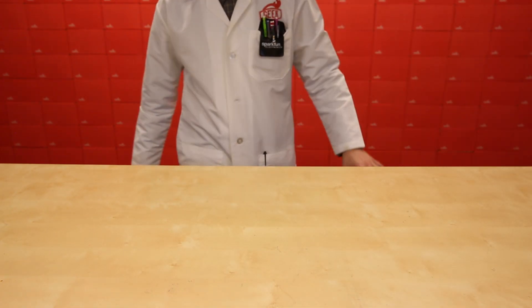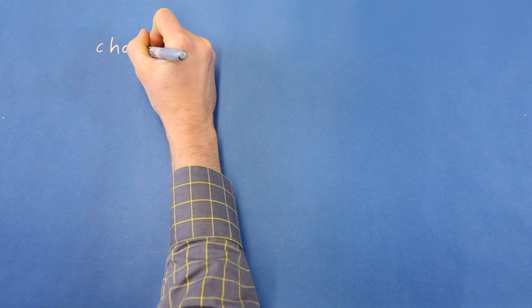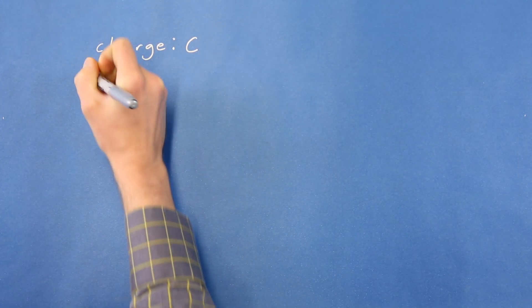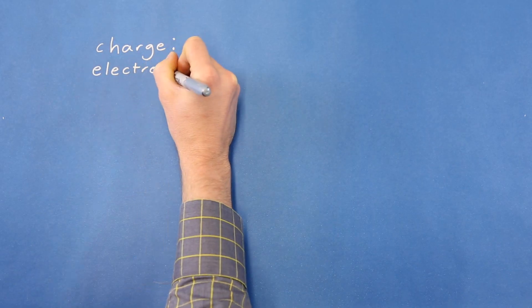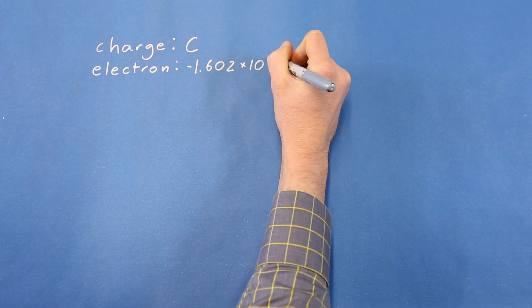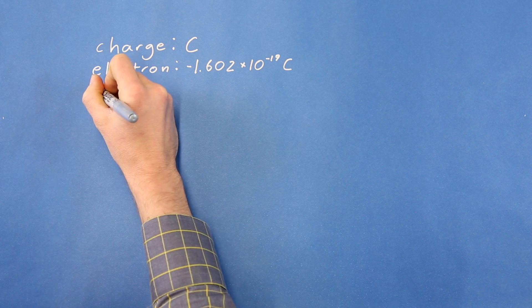Before we go any further, let's talk about units. The SI unit for electric charge is the coulomb, generally abbreviated with an uppercase C. An electron has a charge of about negative 1.602 times 10 to the negative 19th coulombs, and a proton has a charge of about positive 1.602 times 10 to the negative 19th coulombs.